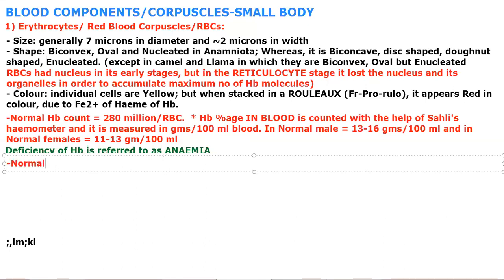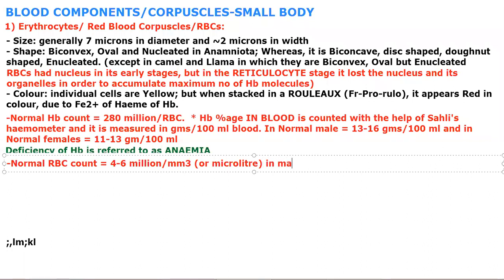Normal RBC count is equal to 4 to 6 million per millimeter cube or microliter in males, and 3 to 5 million per millimeter cube in females. These data vary from book to book, so nothing to worry about.